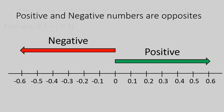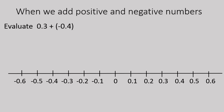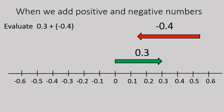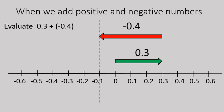So you notice this looks very similar to what we did before. When we add positive and negative numbers, this is what happens. This is the example of 0.3 plus negative 0.4. We start at 0 and move those directions, and we'll end up at the point negative 0.1.